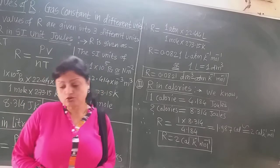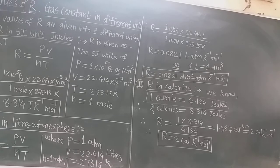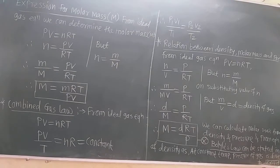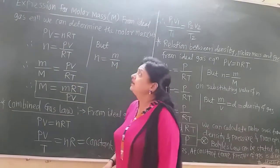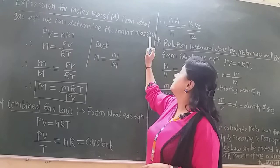These are the different values of the gas constant. Now let us learn the expression for molar mass — that is capital M — which is the molar mass of the ideal gas. The expression for molar mass is calculated from the ideal gas equation.